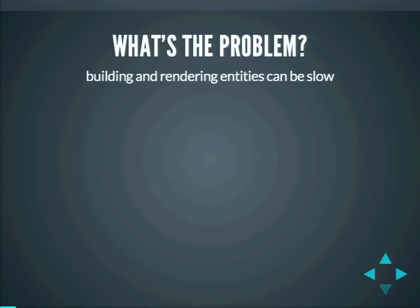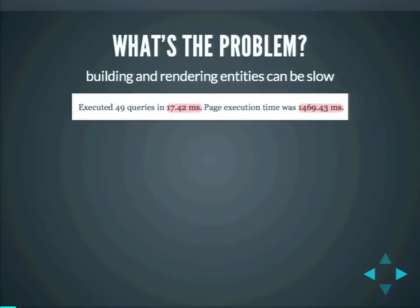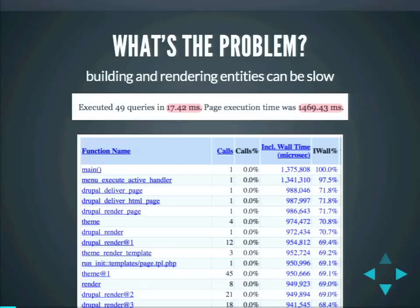You take a look and you see something like this. The database is fine — 70 milliseconds — but page execution time is almost 1.5 seconds. What's going on? You profile it, and you see something like this: render, render, theme, render. When you see this, you have the kind of problem that render caching might be able to solve. This actually might be my most important slide: if you see this, then investigate render caching.